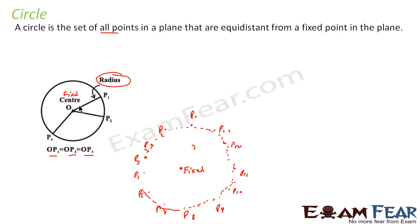Let me repeat once again. The fixed point is called the center. The set of all points which are equidistant from the center is called the circle. The fixed distance is called the radius. Now let this point be (x, y) — we have to find the equation of the circle.